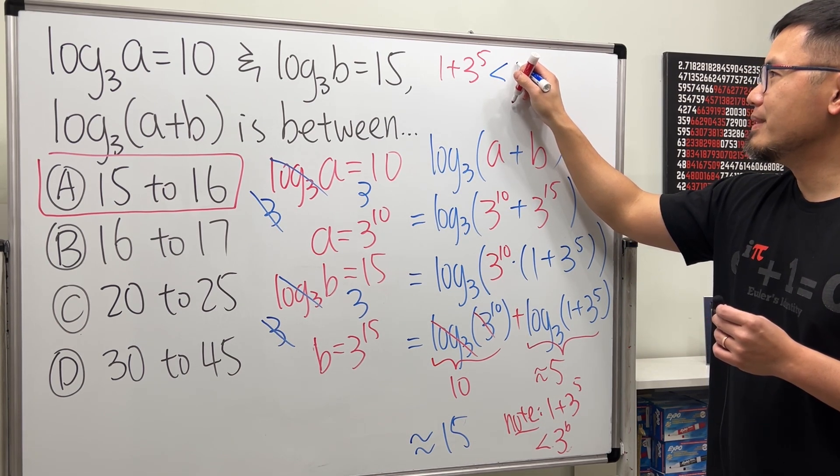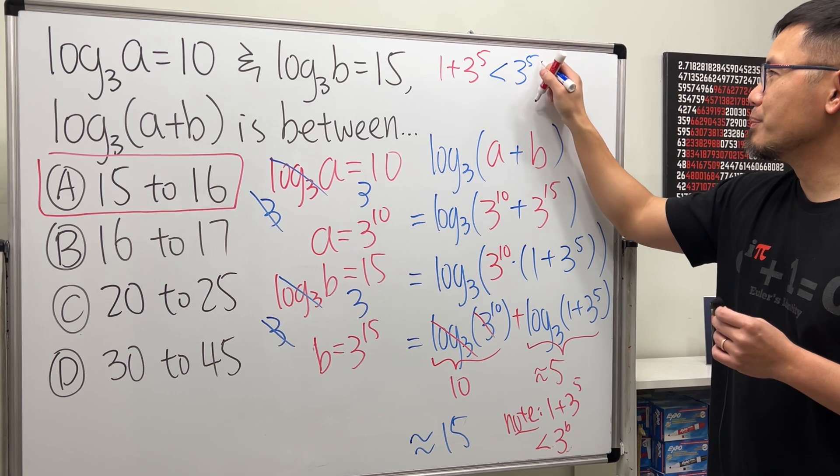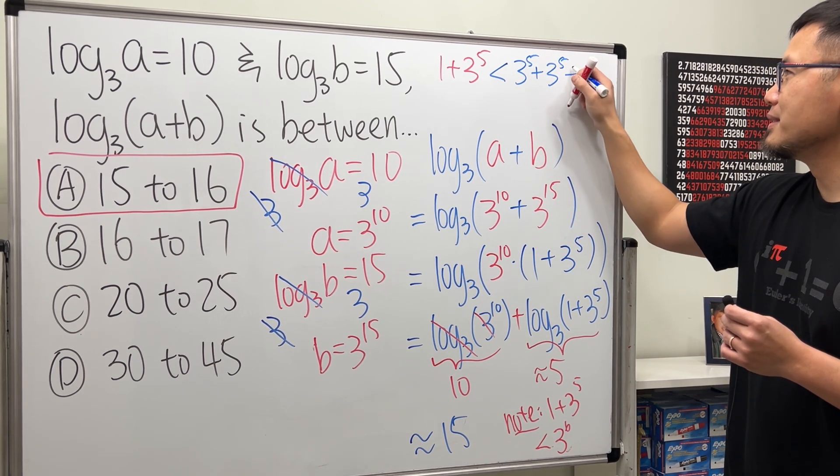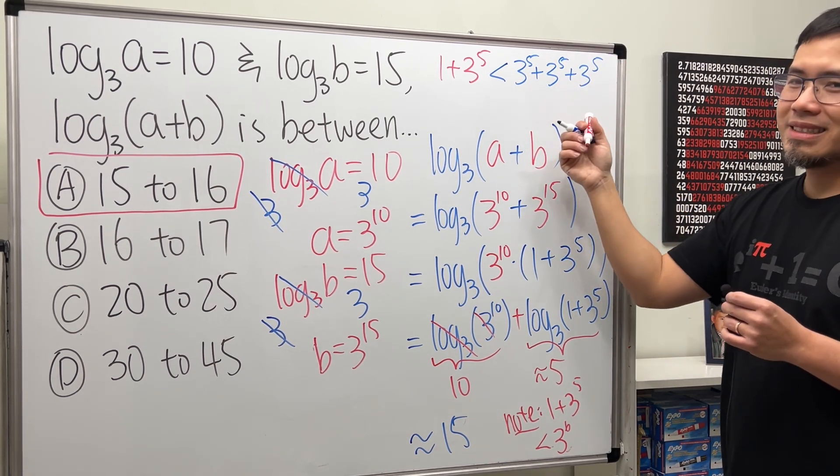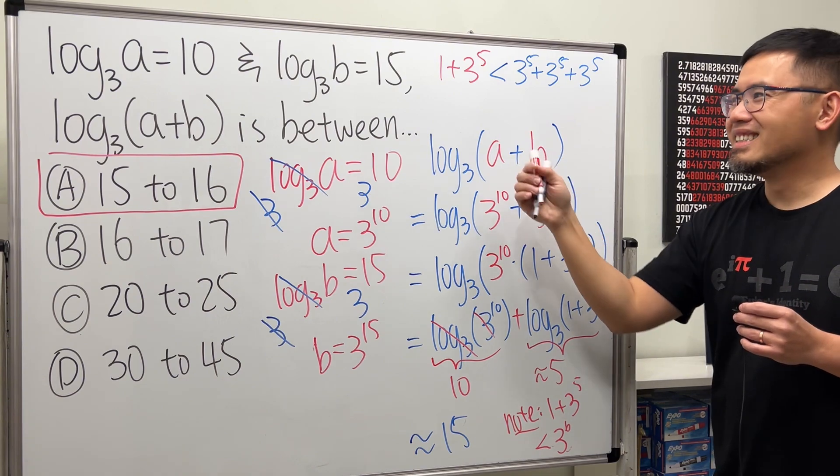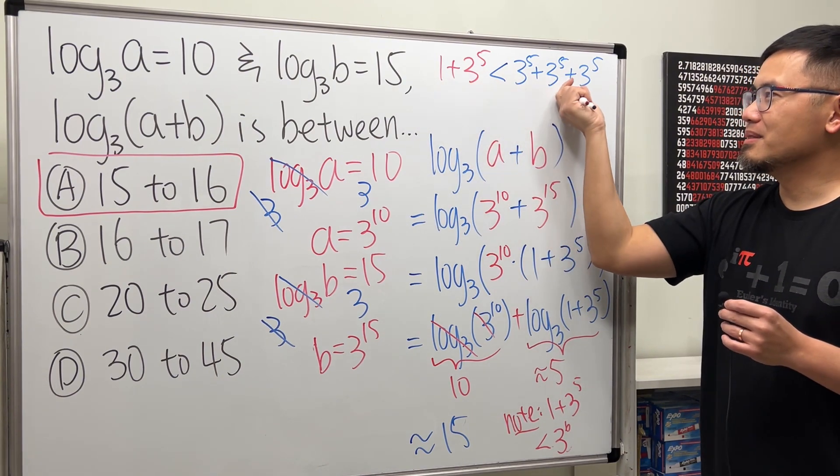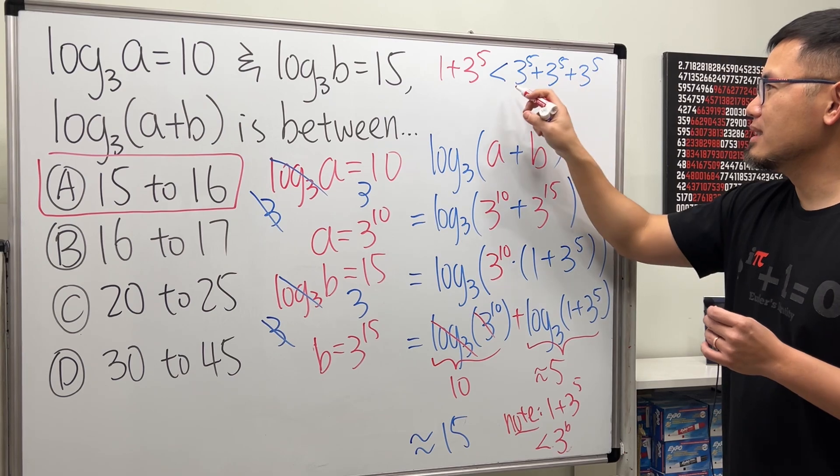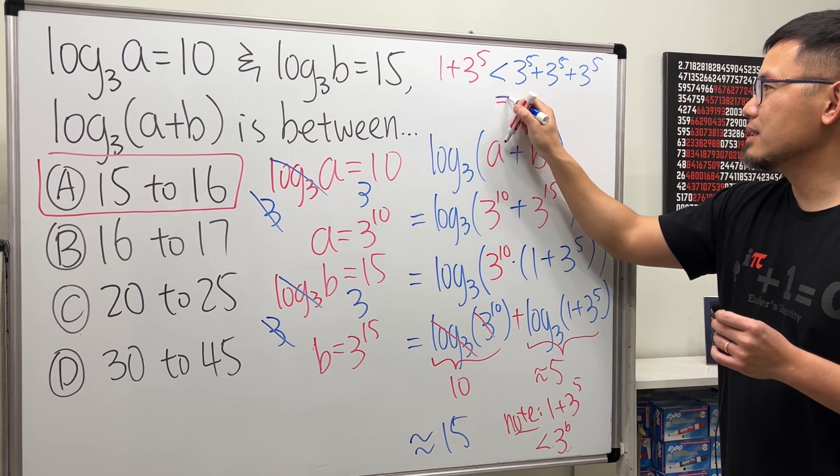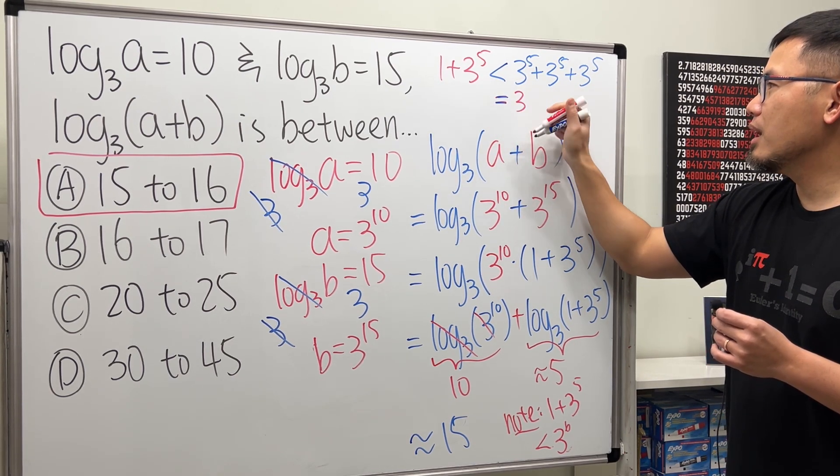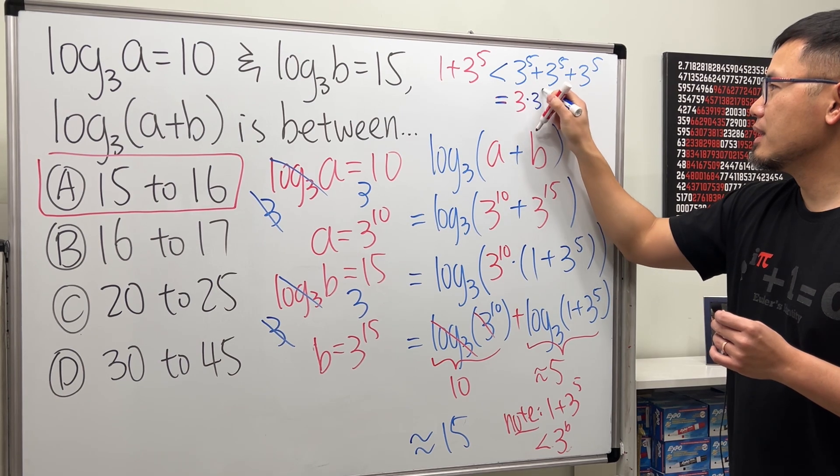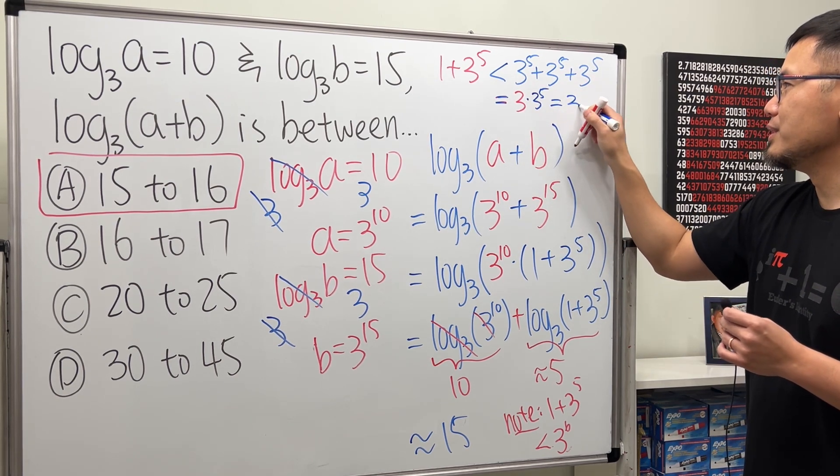Let's say we do 3 to the 5th plus 3 to the 5th plus 3 to the 5th. This is certainly more believable, yeah? 1 is less than this, and then this is the same as that. Why did I put this down? Because this is equal to, this is equal to 3 of these 3 to the 5th, which is the same as 3 to the 6th.